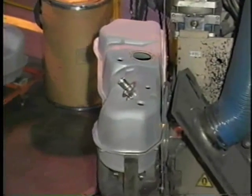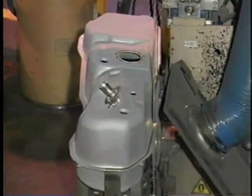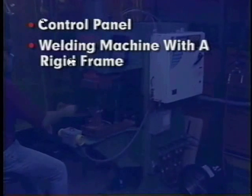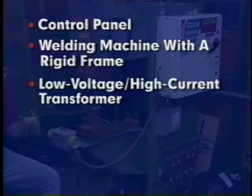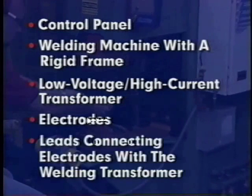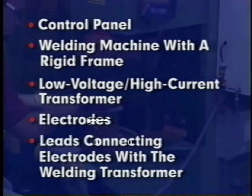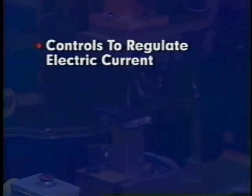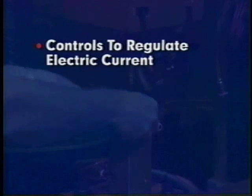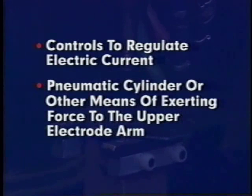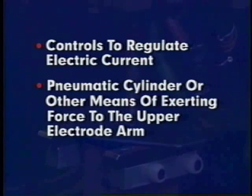The typical resistance welding system consists of a control panel, a welding machine with a rigid frame, a low voltage high current welding transformer, electrodes, leads connecting the electrodes with the welding transformer, controls to regulate electric current, and a pneumatic cylinder or other means of exerting force to the upper electrode arm.